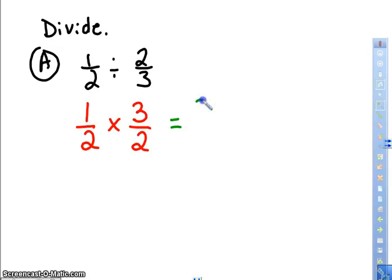So I'm going to multiply crossed. 1 times 3 is 3. 2 times 2 is 4. That cannot be simplified, so 3/4 is your answer. So once again, first one stays the same. Division to multiplication. Second number switches to its reciprocal.